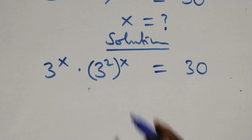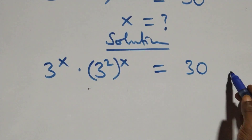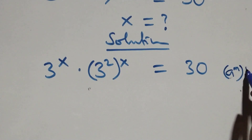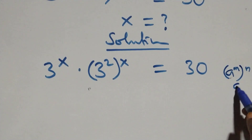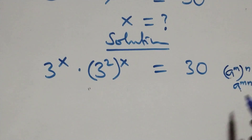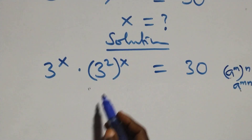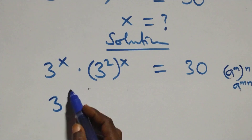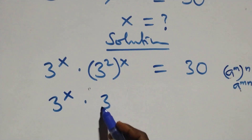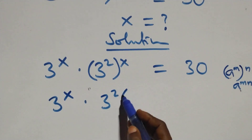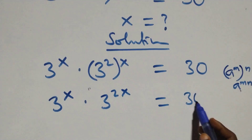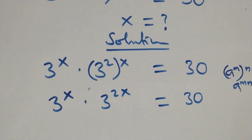This follows from the rule: when we have a raised to power m, raised to power n, this is the same as a raised to power m times n. So the powers multiply, giving us 3 raised to power x times 3 raised to power 2x equals 30.